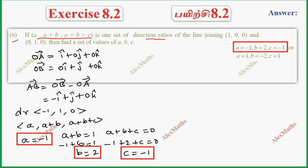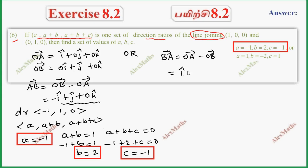But the question is about the line joining, so it could be AB or BA. If we take BA vector, then BA vector equals OA vector minus OB vector, which gives i minus j plus 0k. So the direction ratios of BA vector are 1, minus 1, 0.